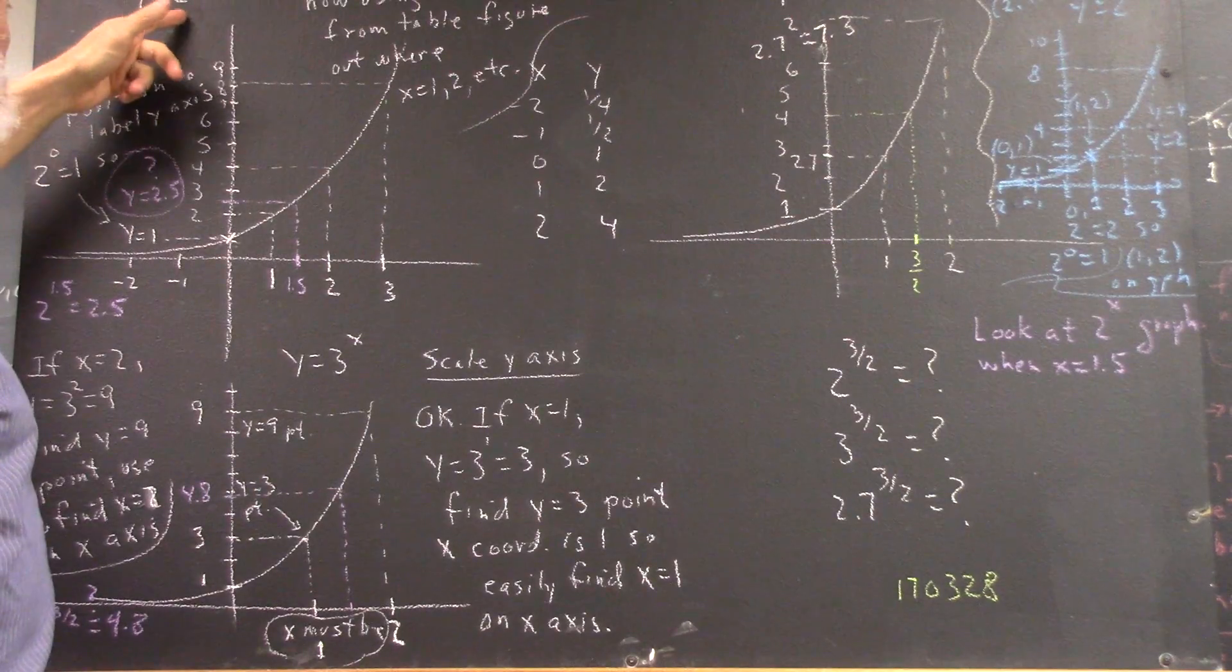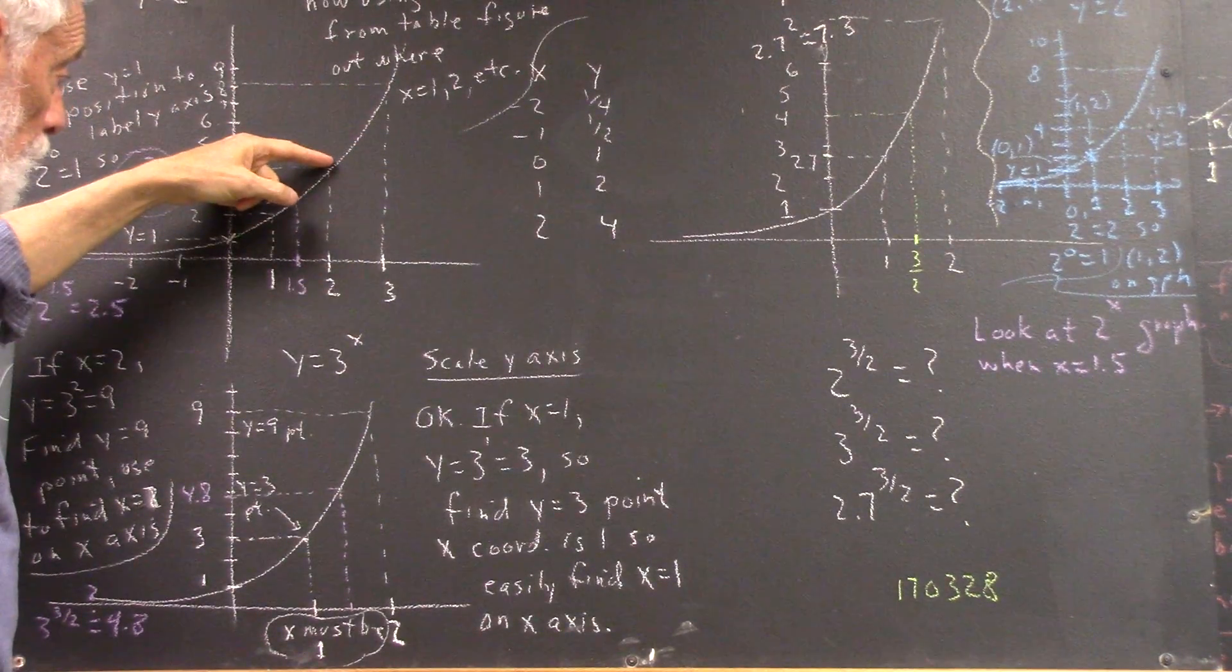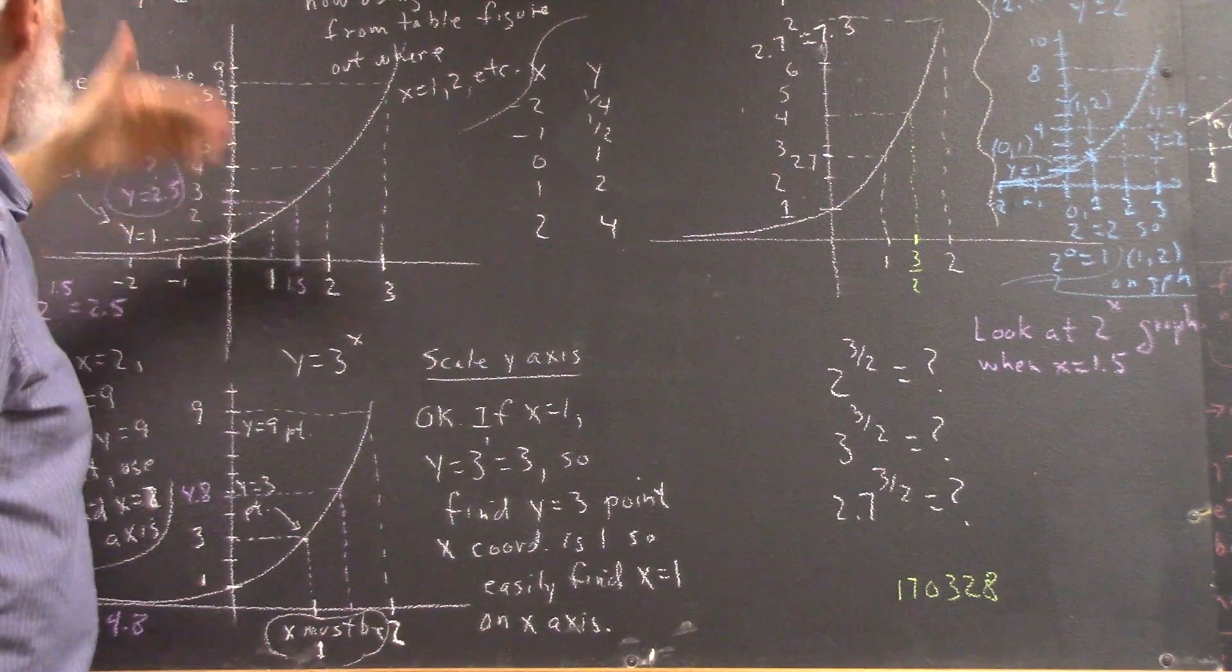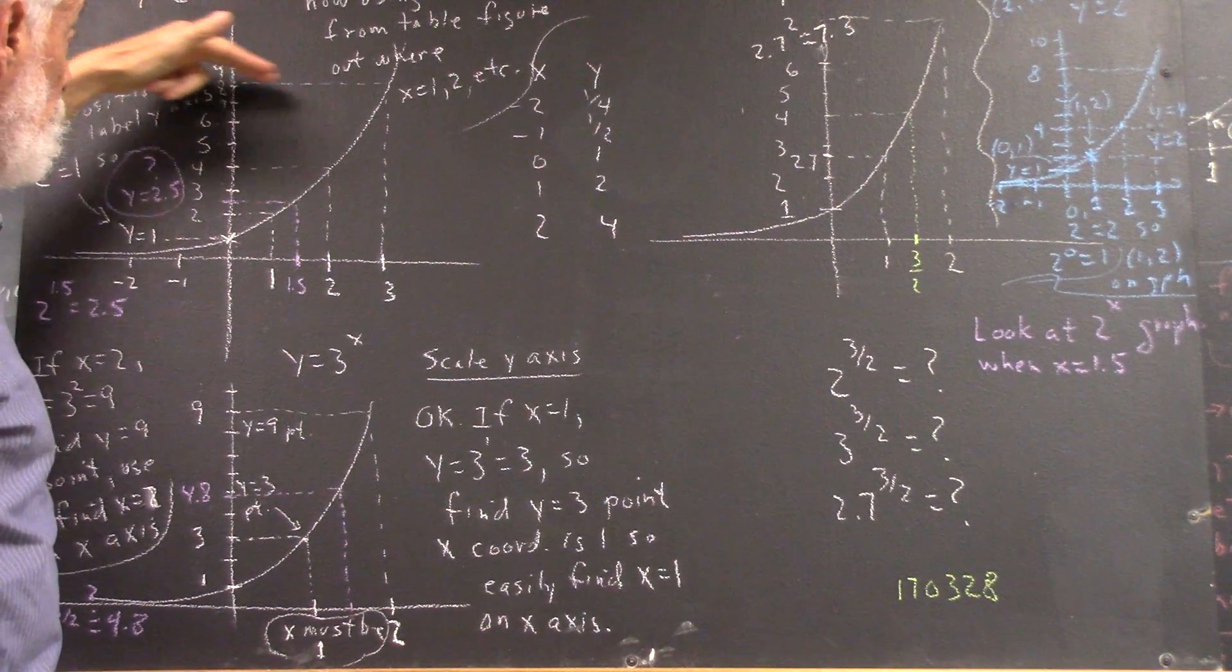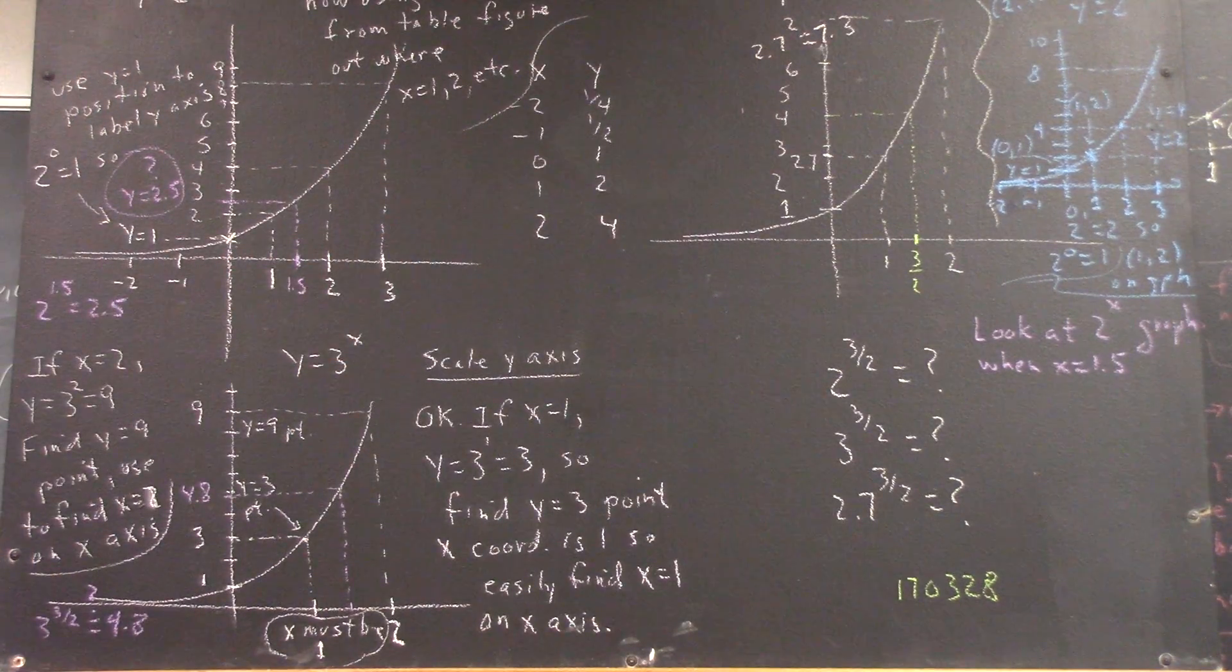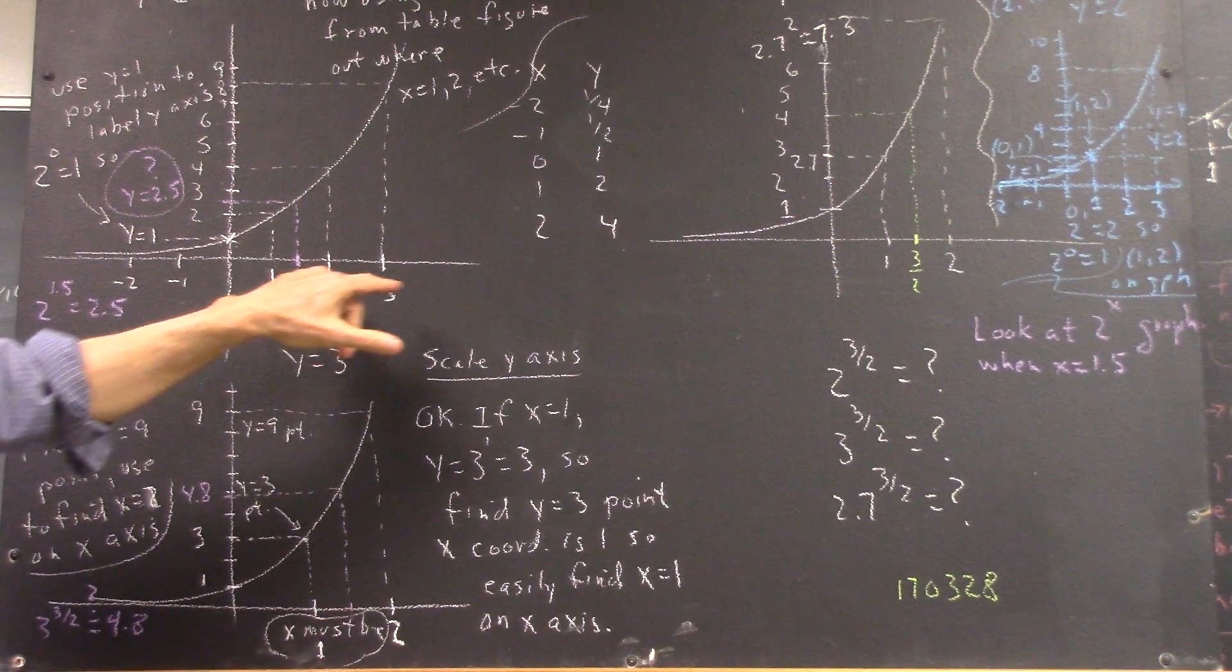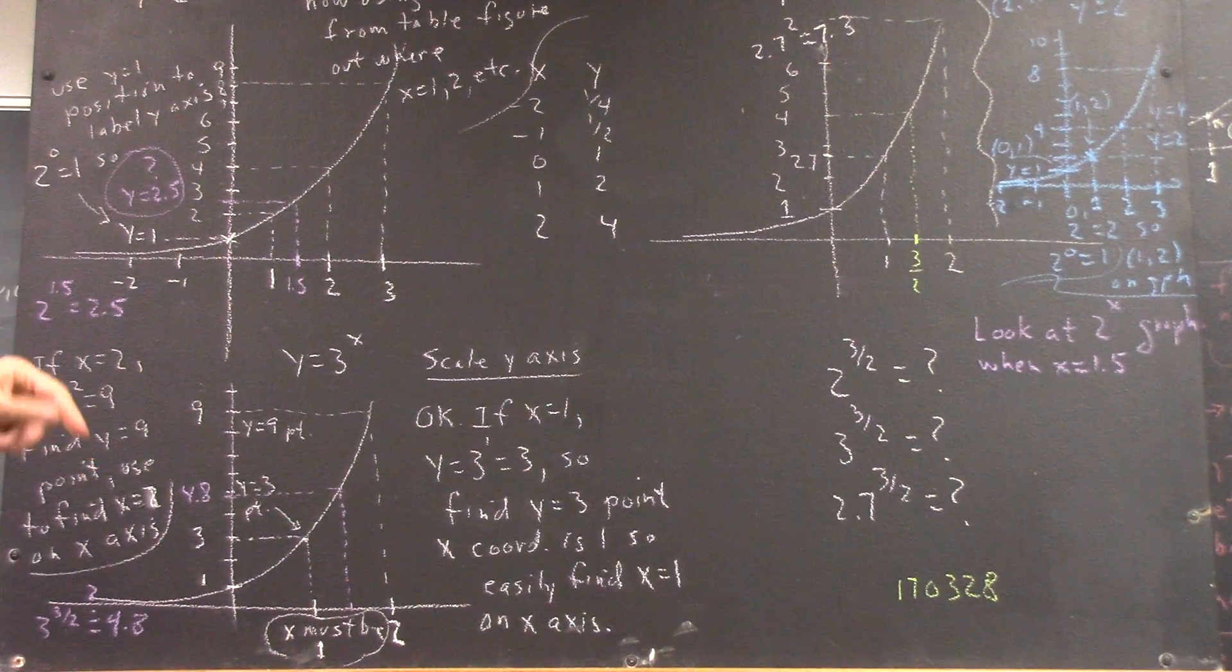And then if x equals 2, y has to be 4. Where on the graph is y equal to 4? Here. That's where x equals 2. And 2 to the 3rd is 8. Where on the graph is y equal to 8? Well, here, at this point. And that projects down here. And these points came out pretty even, so I had pretty uniform units here. And then I just kind of marked off units for negative 1 and negative 2.